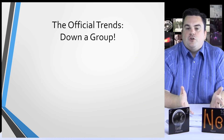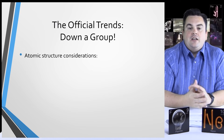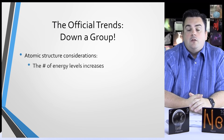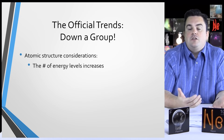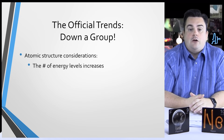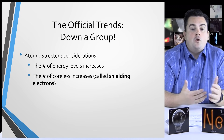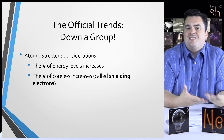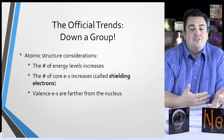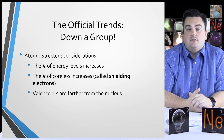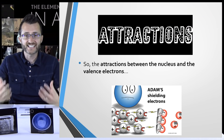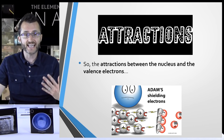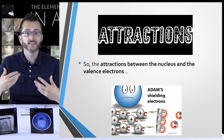Now the official trends going down a group. We're going to take some atomic structure into consideration. First, the number of energy levels increases as you go down a group. The number of core electrons also increases as you go down a group — we call these shielding electrons. The valence electrons are farther from the nucleus. Based on these atomic structure considerations, the attractions between the nucleus and the valence electrons decrease.